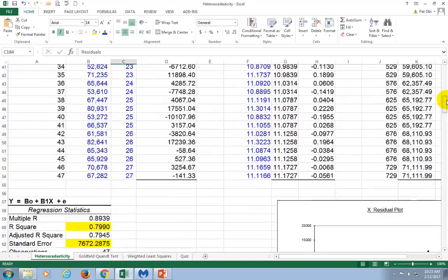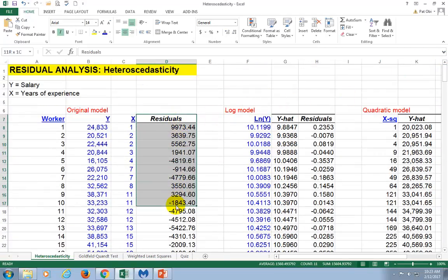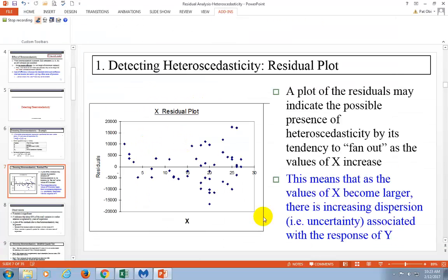And this is not on the original model, by the way, so here are the residuals. I copied it over next to the original model. And then, you can plot it against Y hats, or you can plot it against X, as I did here. It's going to be the same pattern.